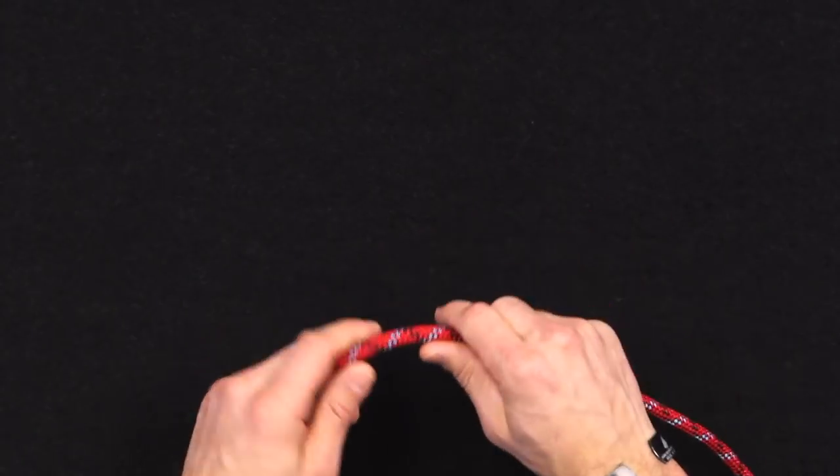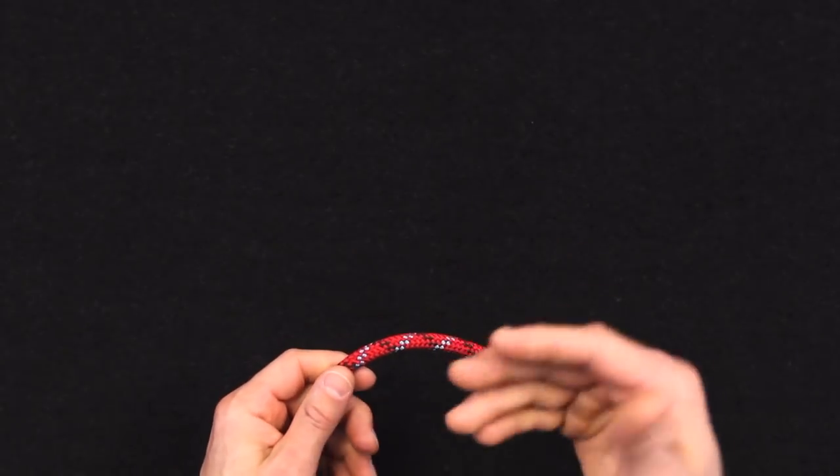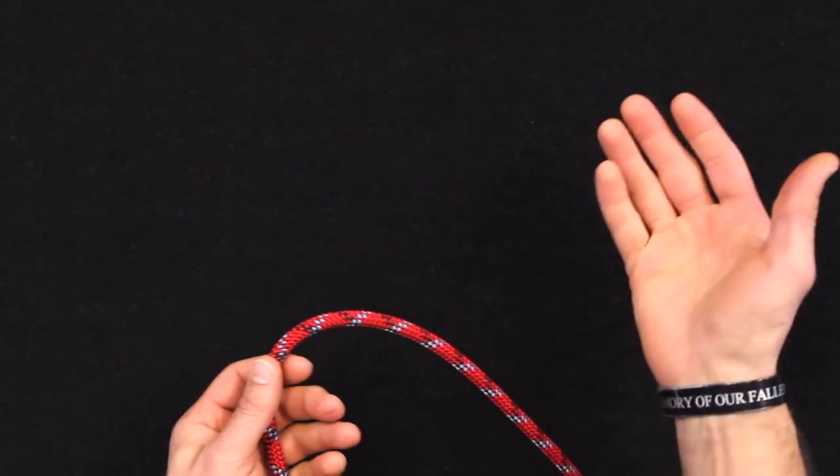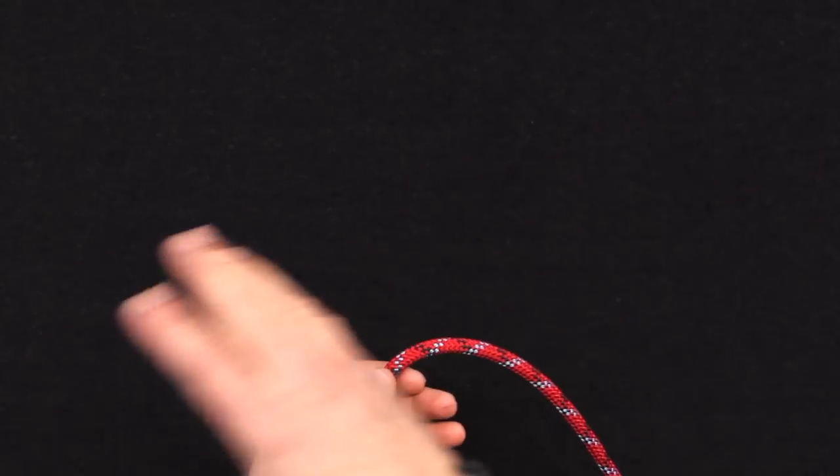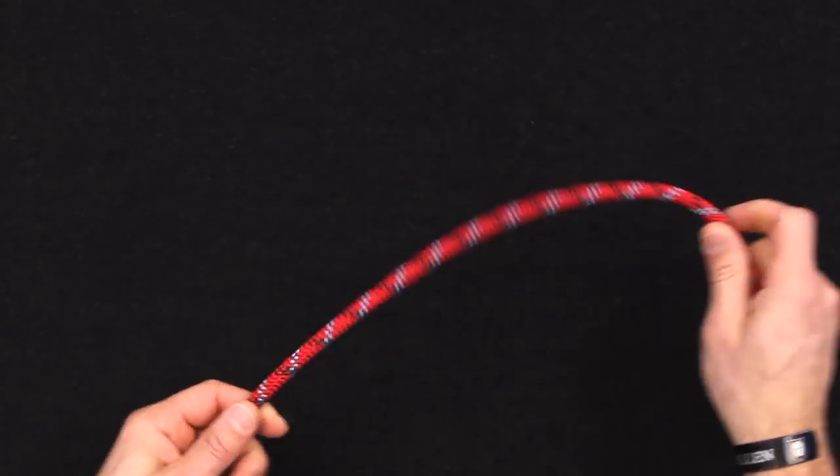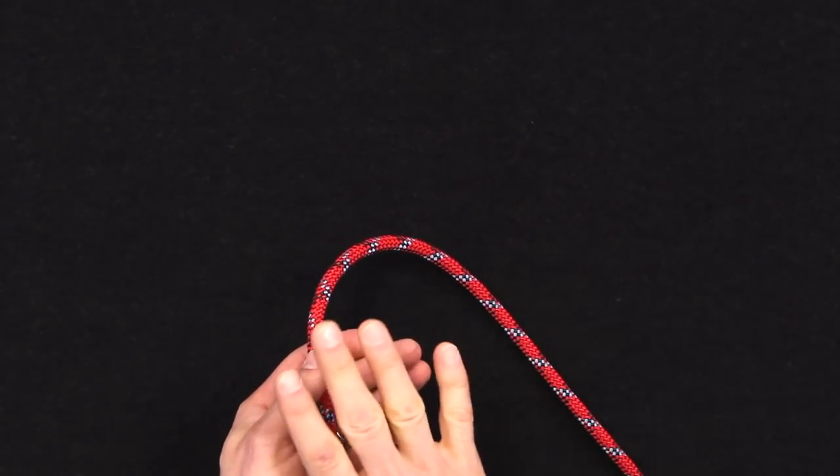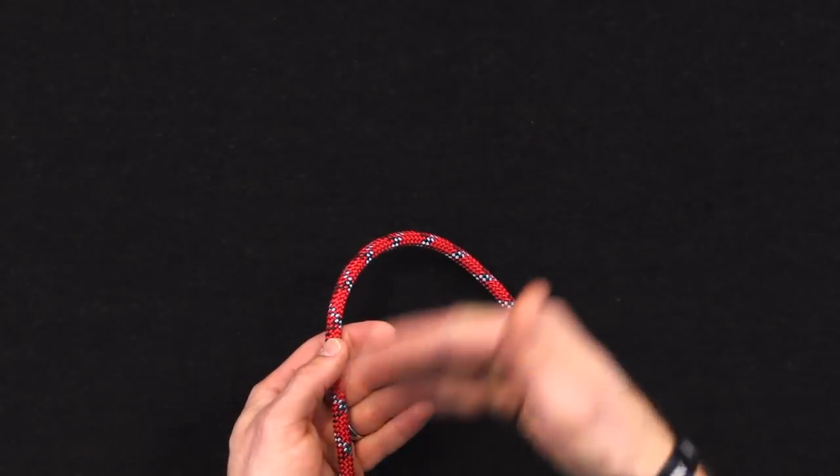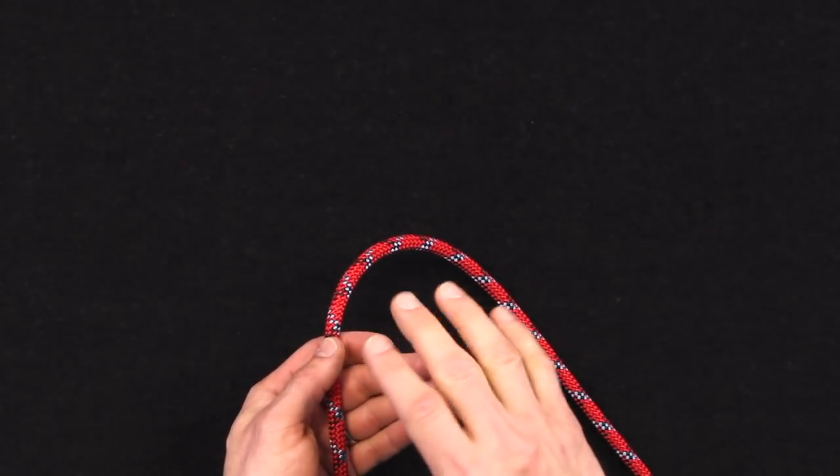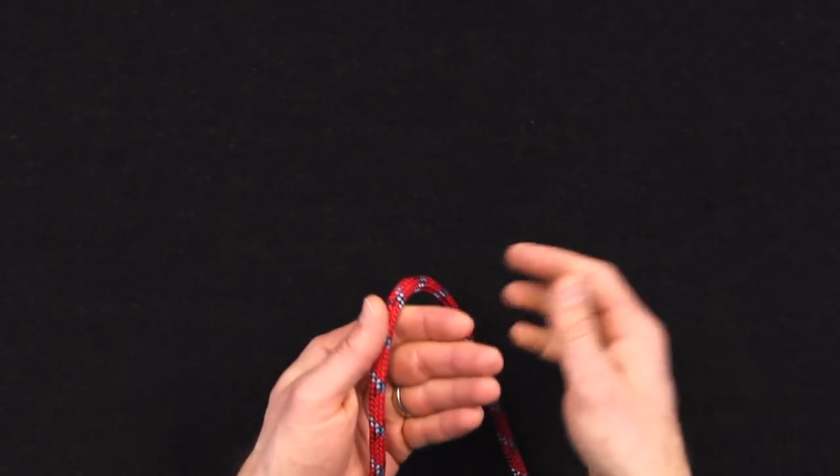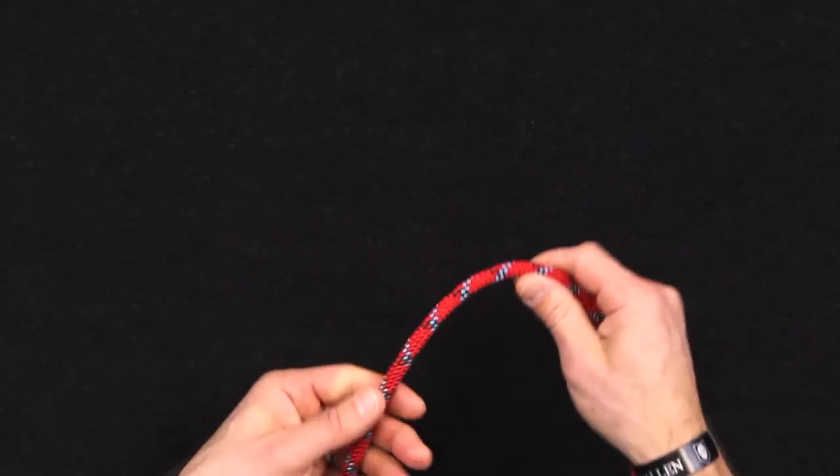Alright, so a couple of things about the clove hitch first before we get into tying it. It works great to tie things up to like a post, so in the old days people used to tie their horses up with a clove hitch to a hitching post. It's good in that regard as long as whatever is pulling against it is not going to move too much because it can slip out of its tied position, so that's just something to kind of note.